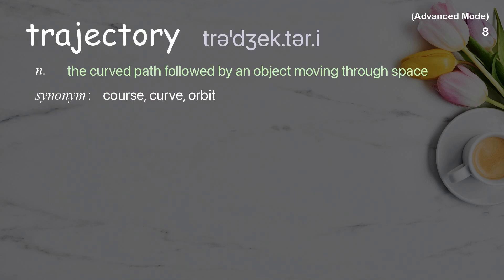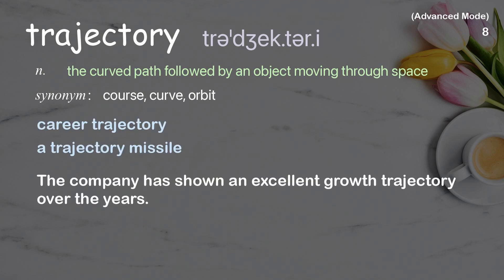Trajectory. The curved path followed by an object moving through space. Examples: career trajectory, a trajectory missile. The company has shown an excellent growth trajectory over the years.